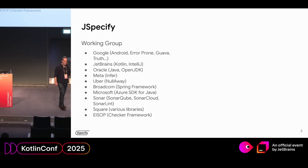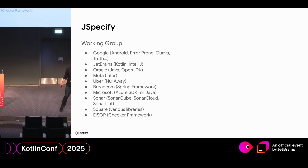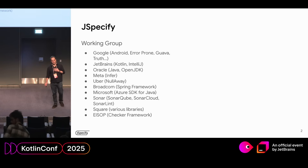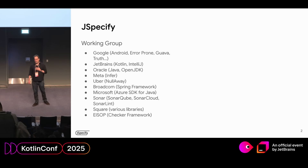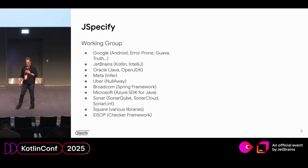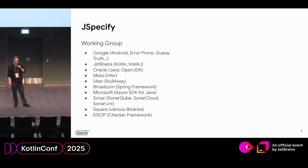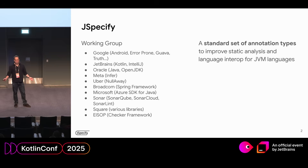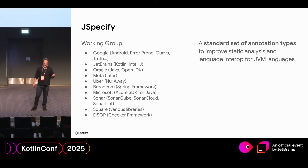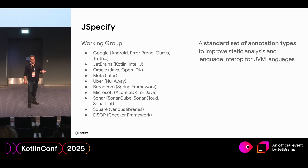First off, what is JSpecify? It's a working group. I work at Google, but it's not just Google. It's got people from a number of different companies — JetBrains, Oracle, Meta, Uber, Broadcom, which produces Spring Framework. You may have heard Sebastian talk about JSpecify yesterday. What we are doing is producing a standard set of annotation types for static analysis and language interop across JVM languages.